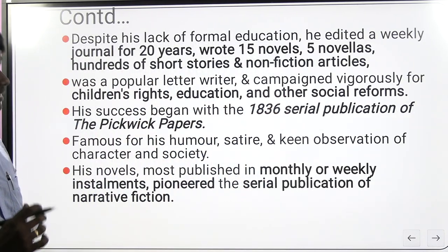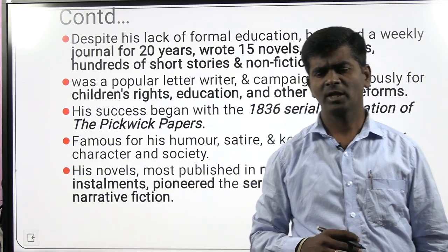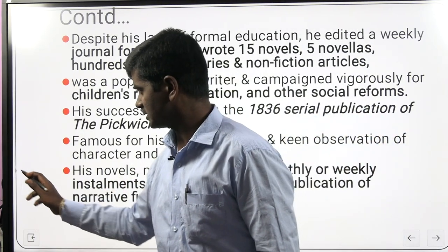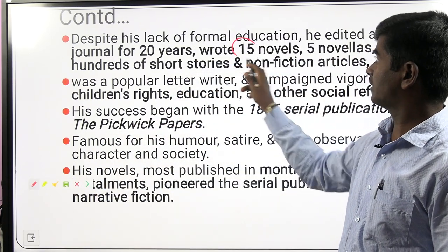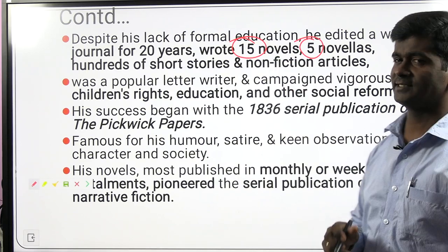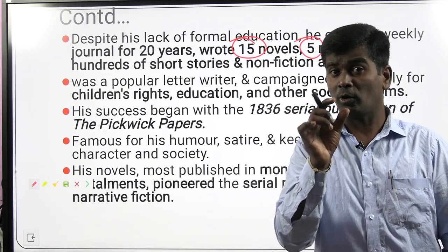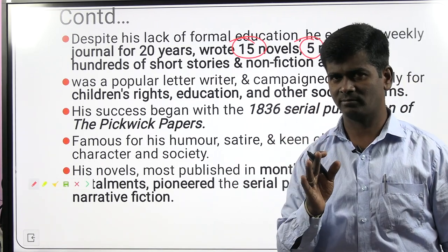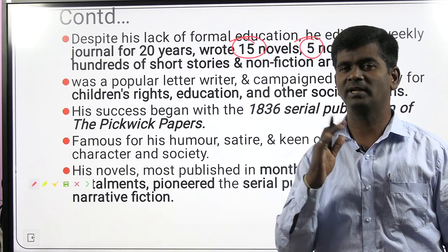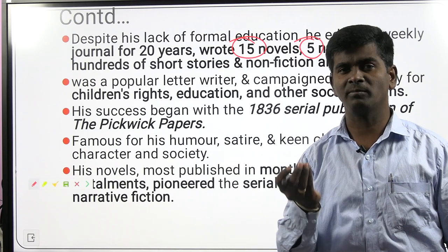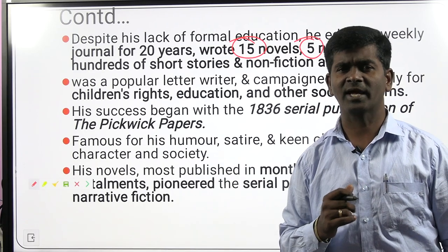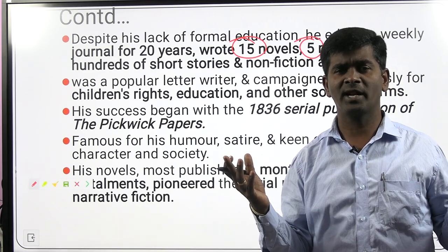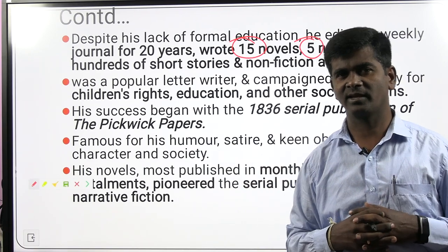Despite not having a good formal education, Dickens was able to write 15 novels. As a writer he composed around 50 novels and 5 novellas. A novella is shorter than a novel and longer than a short story, and not as complex as a novel. A novel can include more than 100 characters, while a novella has a limited number of characters, settings, and scenes — perhaps 5 to 30 characters — whereas a novel can run to 500 characters and 500 pages.